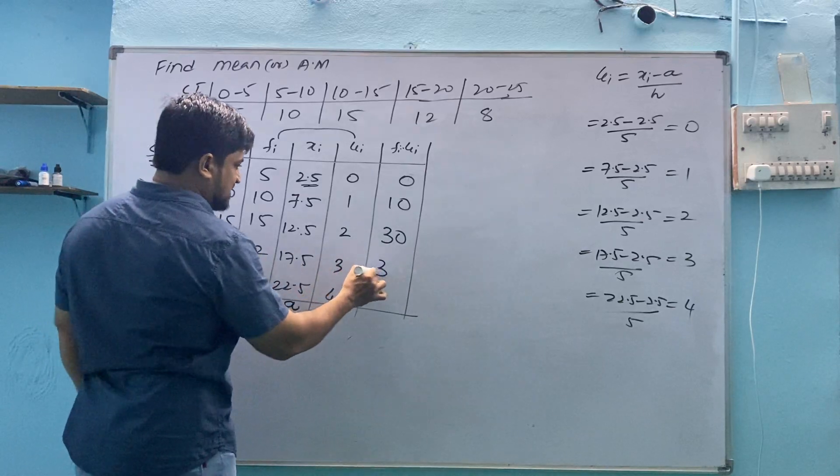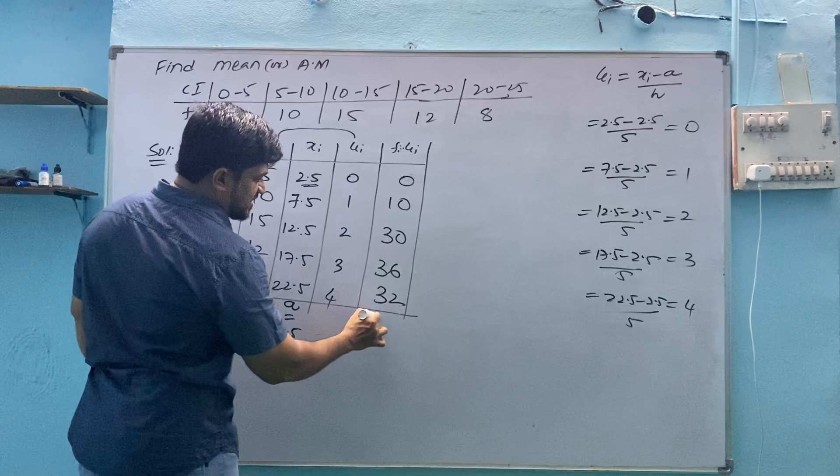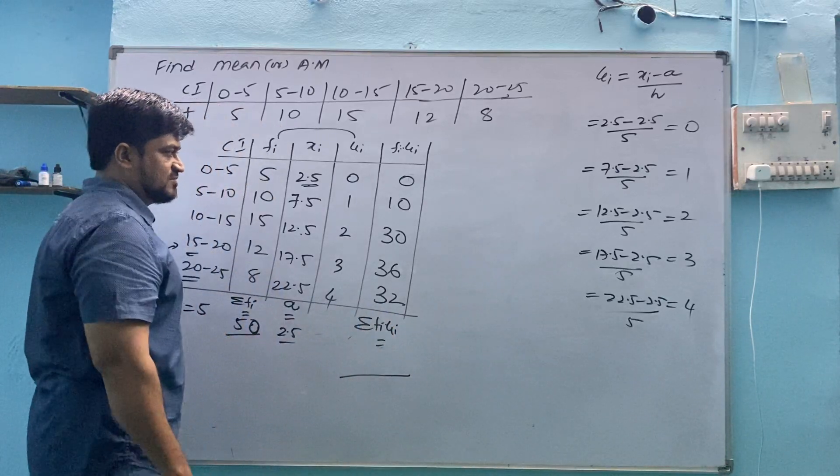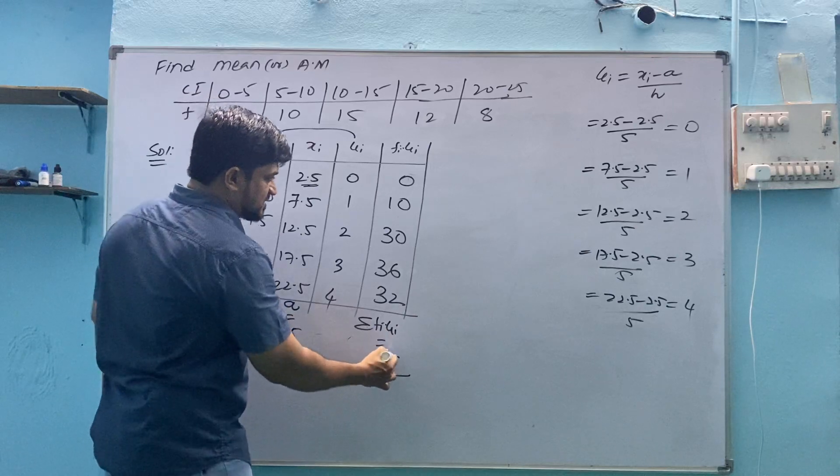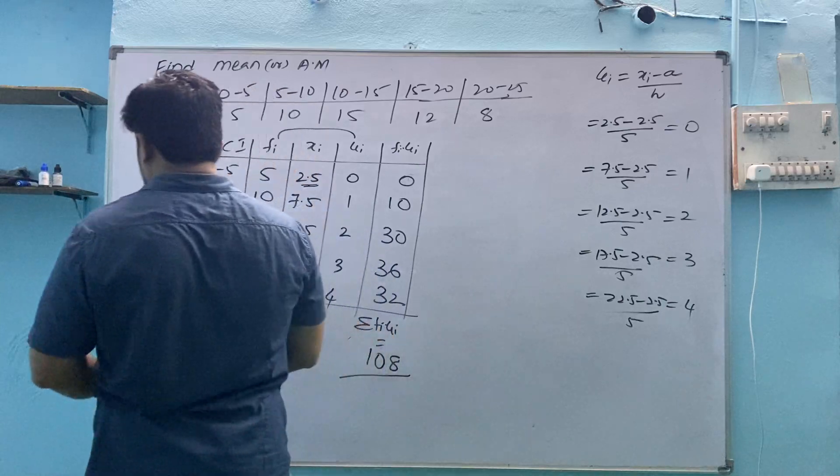12 into 3 is 36, 8 into 4 is 32. This is summation Fi Ui, total of this one. Then we have 6, 8, 3, 3, 6, 3, 9. 10, 1, 0, 8. Now we have to find the value of mean by using the formula.